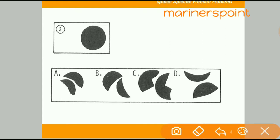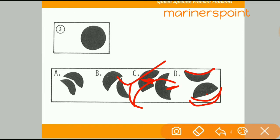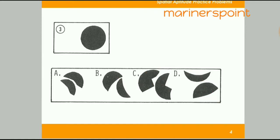We will check option C — when we rotate it anti-clockwise, this will fit here, so our right answer will be C. When we check option D, it does not fit properly. So D is not our right answer. Our answer is C because it fits properly, while the others do not.